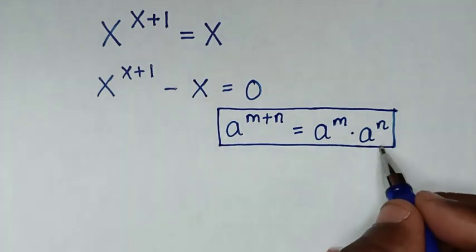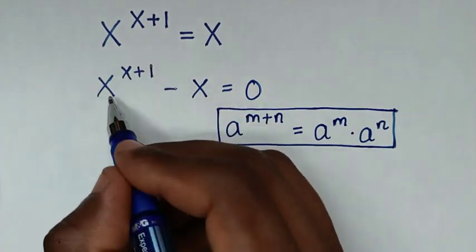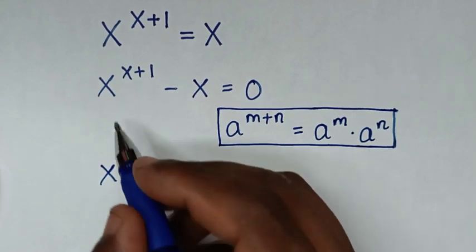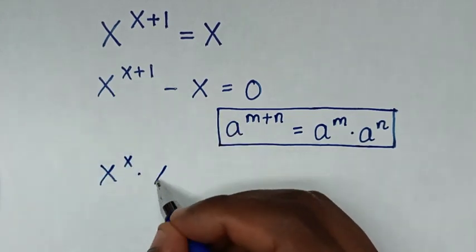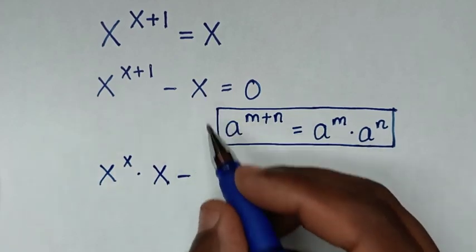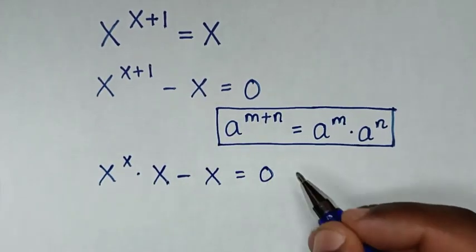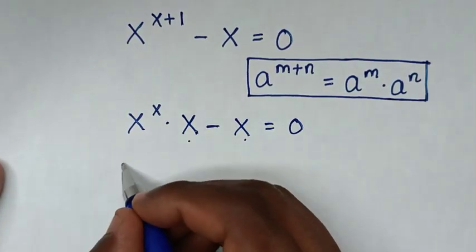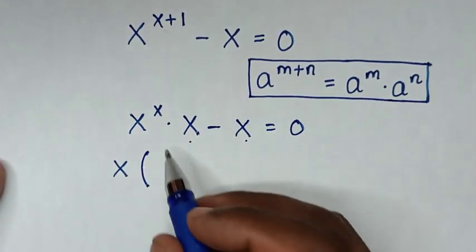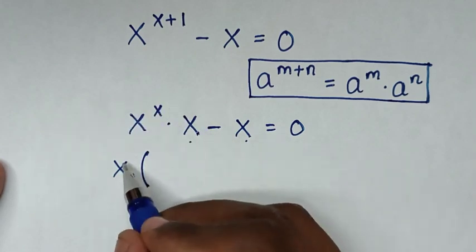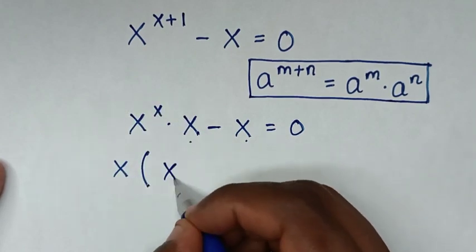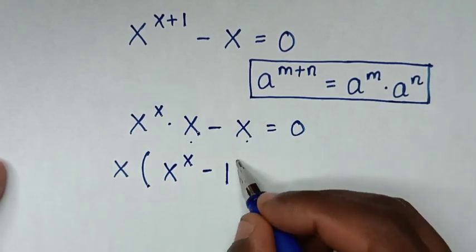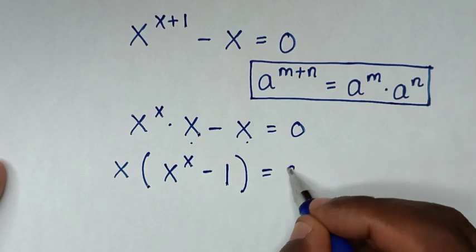So we will apply this form. It will be x power of x times x power of 1, which is the same as x, then minus x is equal to 0. Then x is common, so we will take x out of the bracket, giving x times (x^x minus 1) is equal to 0.